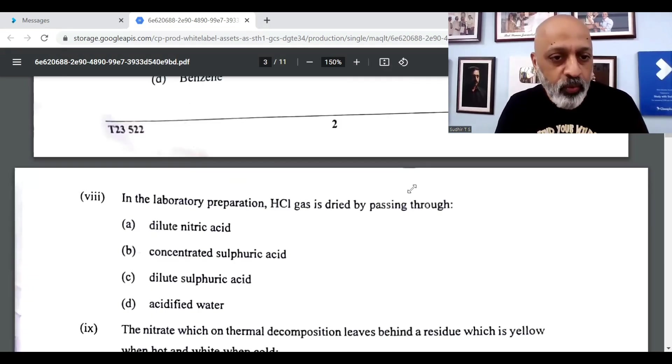The 8th question, in the laboratory preparation HCl gas is dried by passing through, the correct option is concentrated sulfuric acid, option B.